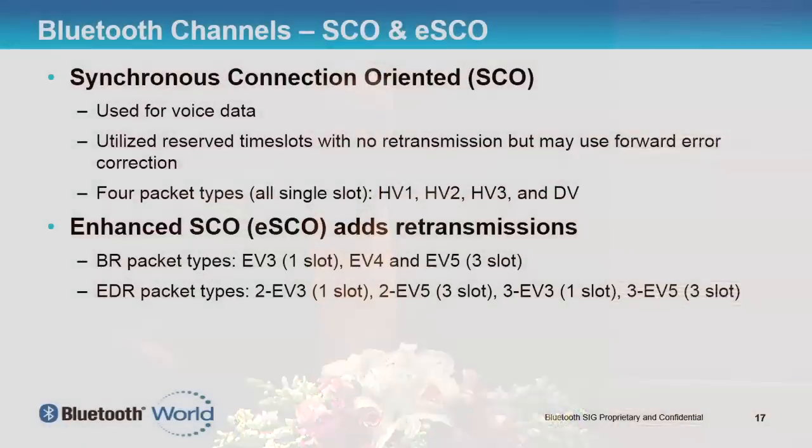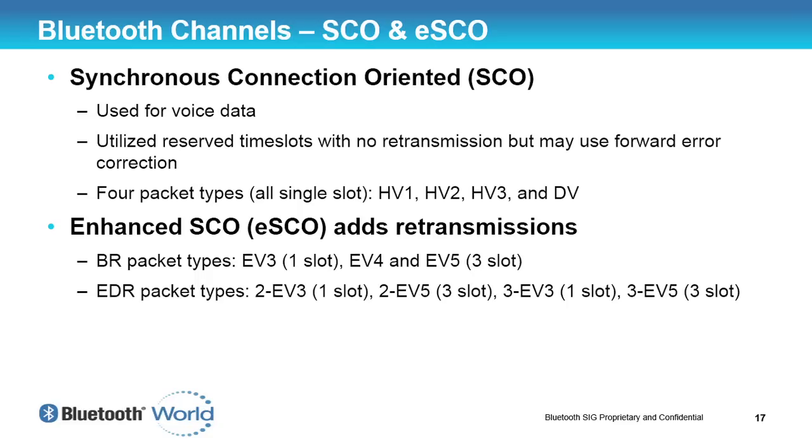With SCO, there are four basic packet types — HV1, HV2, HV3 — sent at different intervals. ESCO was introduced in the 1.2 specification, allowing us to vary the latency and the amount of data included in a packet. This helps tremendously with coexistence with, for example, LTE radios. There are a large number of different packet types available. If you look at the Hands-Free Profile version 1.5, there's a table describing different ESCO configuration settings for best possible performance.